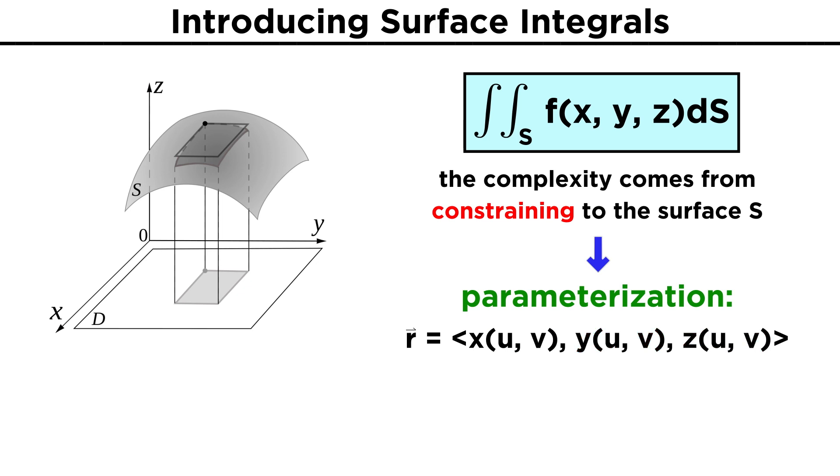With this parameterization, we will be able to express the dS in the surface integral in terms we can use. It turns out that this dS can be expressed as the magnitude of the cross product of the R vector's derivatives, which we will call R U and R V, dU dV. Written out, R U equals dX dU, dY dU, dZ dU.